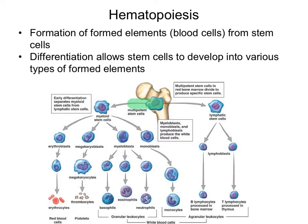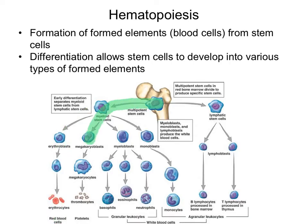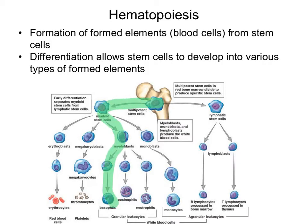In one pathway, the stem cell becomes an erythrocyte, or red blood cell. In another pathway, the stem cell becomes a thrombocyte, or platelet. And then in multiple pathways, a stem cell can become different leukocytes, or white blood cells.